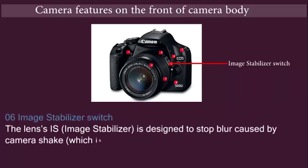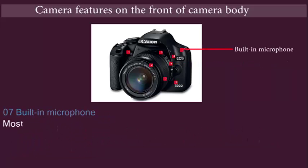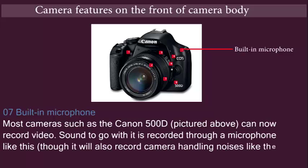Image stabilizer switch: This is especially noticeable when you are zoomed in on a distant subject. Built-in microphone: Most cameras such as the Canon 500D can now record video, and sound is recorded through a microphone like this, though it will also record camera handling noises like the zoom ring being rotated.